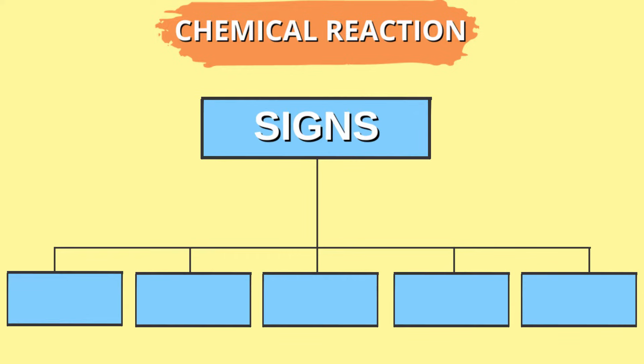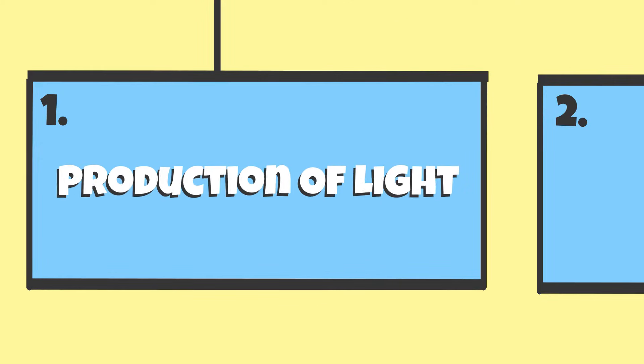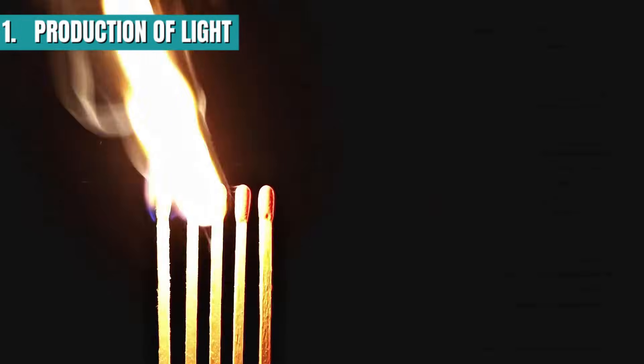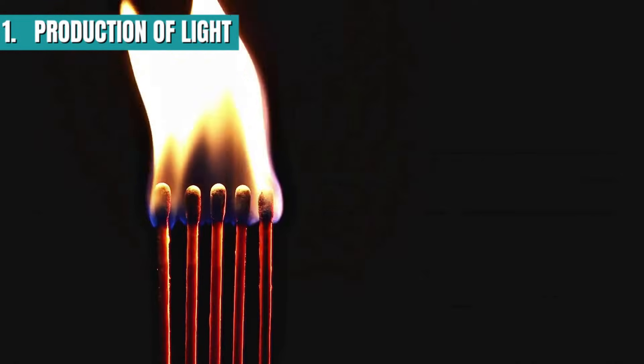There are generally five signs that we can look for to figure out whether a chemical reaction has taken place. The first sign is the production of light. For example, when we light a match stick, the chemical reaction starts and energy in the form of light is produced.